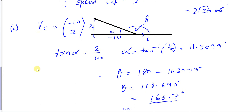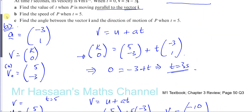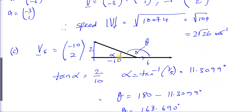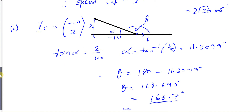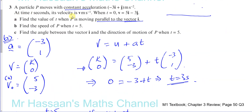It doesn't say find the bearing — it says find the angle. The angle between i and the direction of motion of P means the angle from the positive direction of i. So 168.7 degrees is the answer to question 3 from M1 chapter 3 review exercise.